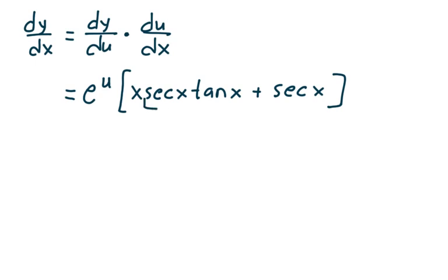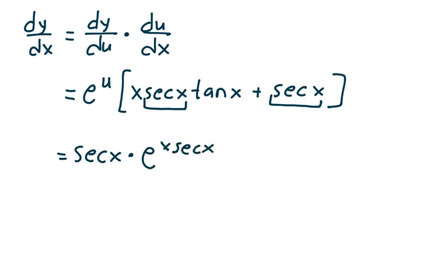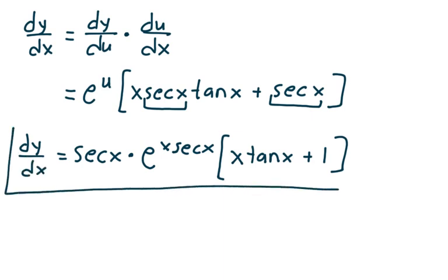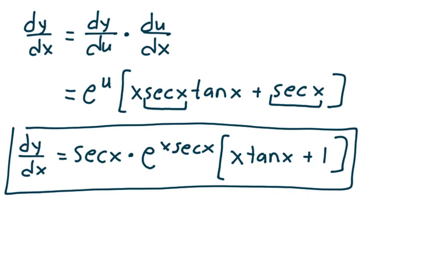I notice a secant x in common, so I factor that out. Replacing u with x secant x, dy/dx equals secant x times e to the x secant x, multiplied by x tangent x plus 1. That's the answer to problem 16 and a good stopping point. That concludes this video for the exam 2 review, where we worked problems 9 through 16. Thank you.